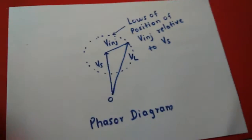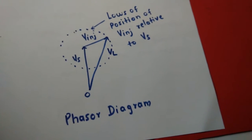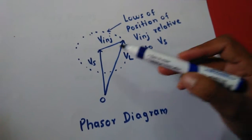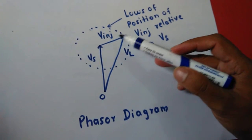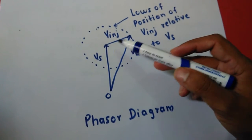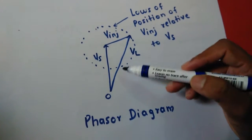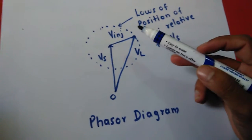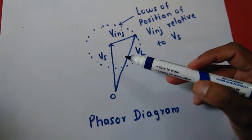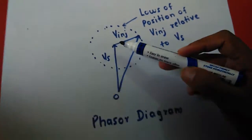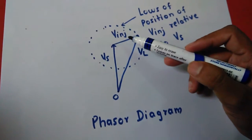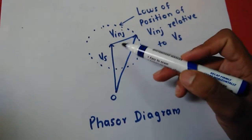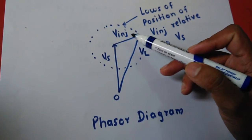This is the phasor diagram of UPFC. The power control is achieved by adding the series voltage V injected to Vs so that Vs and V injected will control the load voltage. With two converters, UPFC can supply active power and reactive power. Vs is the center of the circle so that V injected is maximum. Power flow from Vs to Vl is under control by this V injected voltage.